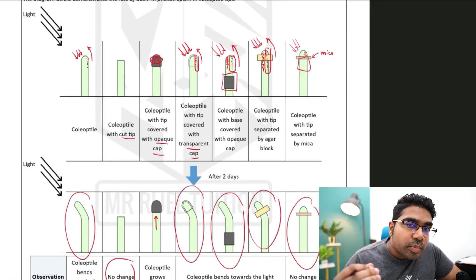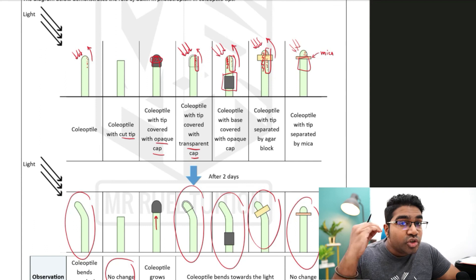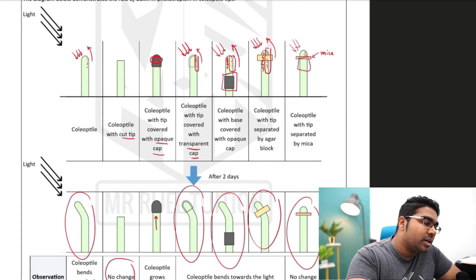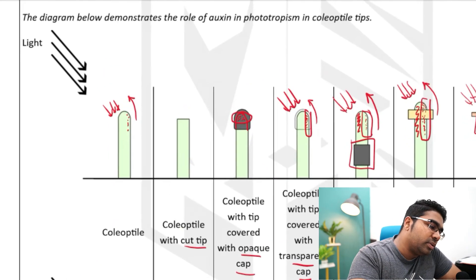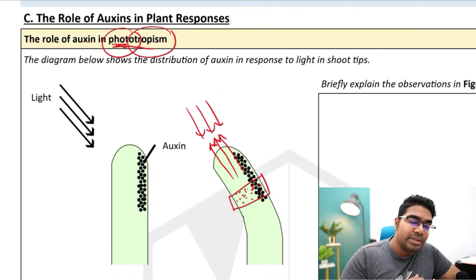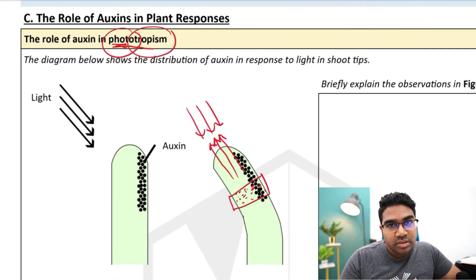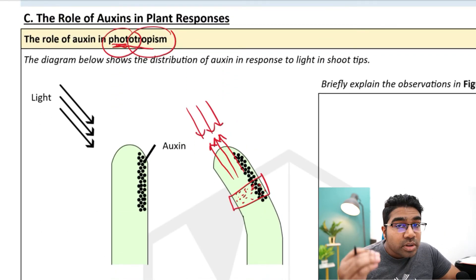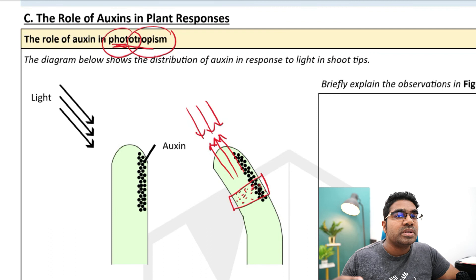The overall effect of auxin on phototropism in the shoot of the plant is that it causes the plant to grow towards the light stimulus, and therefore it causes positive phototropism in shoots.